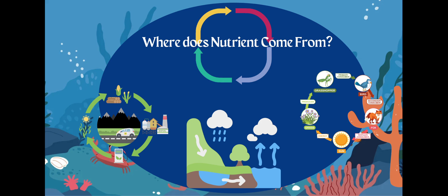Now let's tie into where these nutrients come from. Where does all of the nutrients come from? They come from food webs — throughout the food web and food chain, nutrients are being cycled. Also, it's going to come from land and the atmosphere.